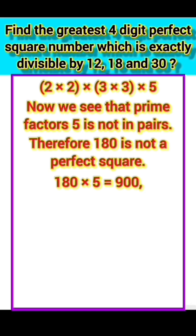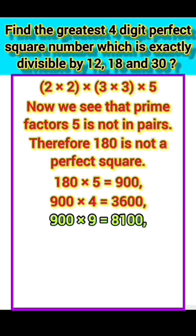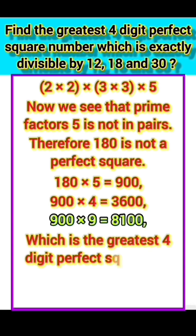Not the greatest 4-digit perfect square number. Again, 900 × 4 equals 3600, 900 × 9 equals 8100, which is the greatest 4-digit perfect square number exactly divisible by 12, 18 and 30.